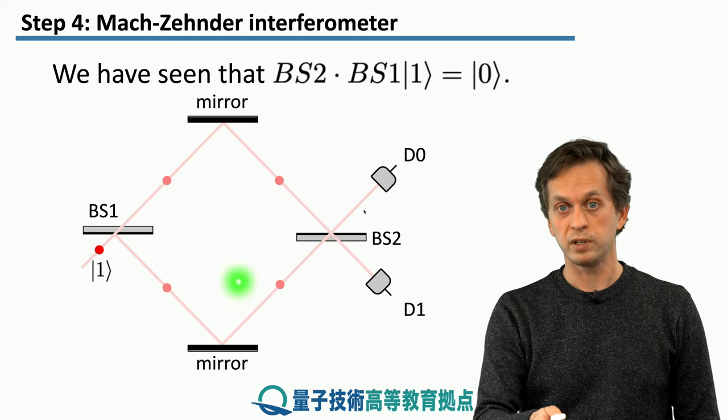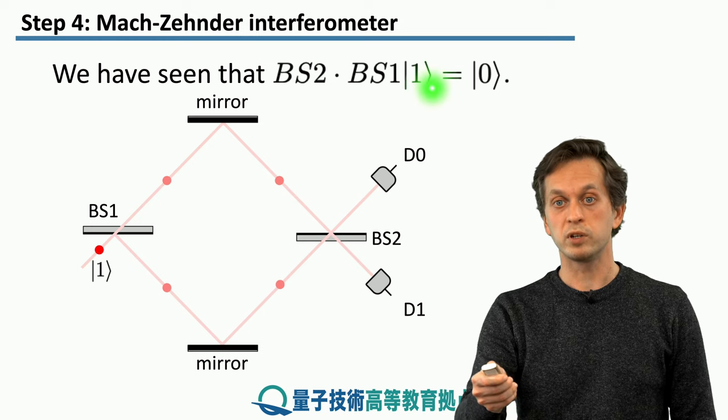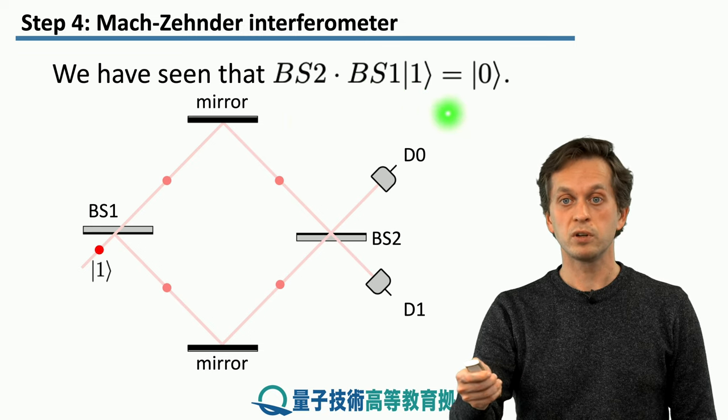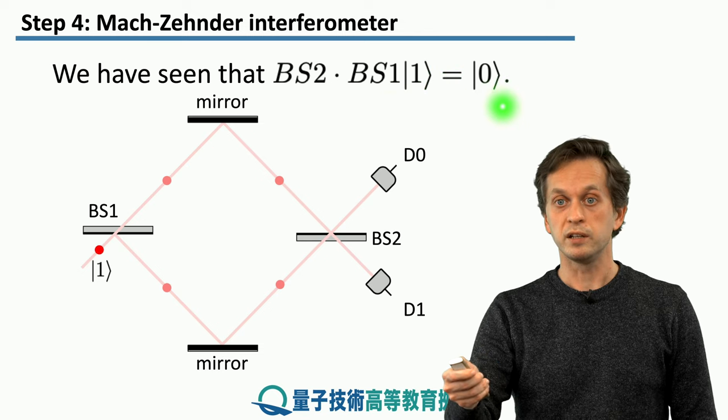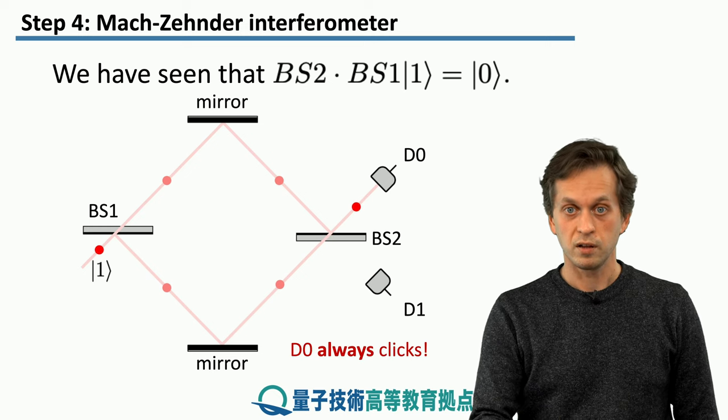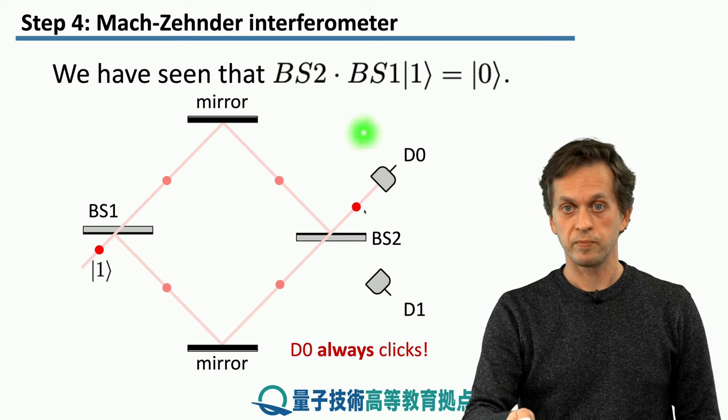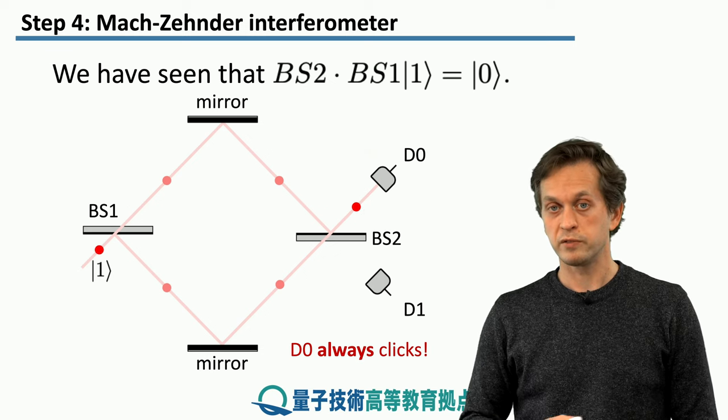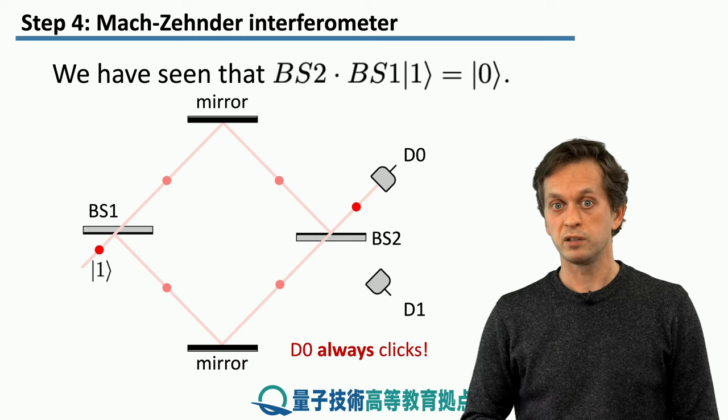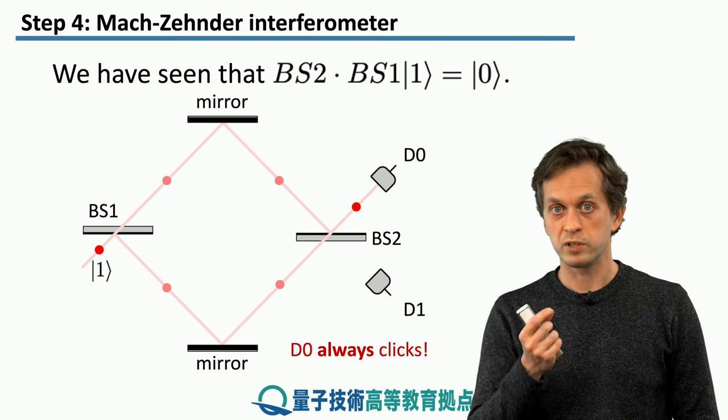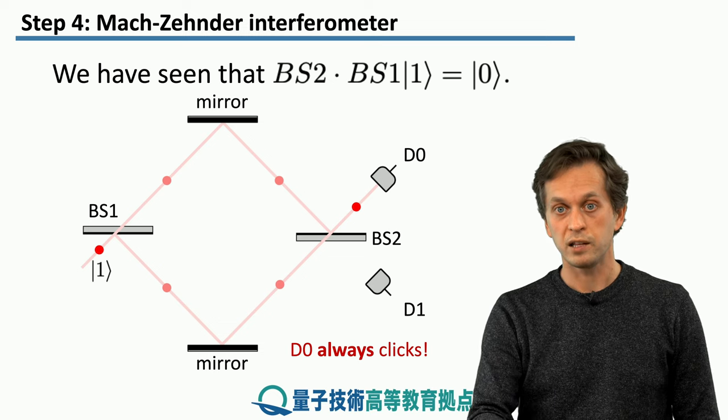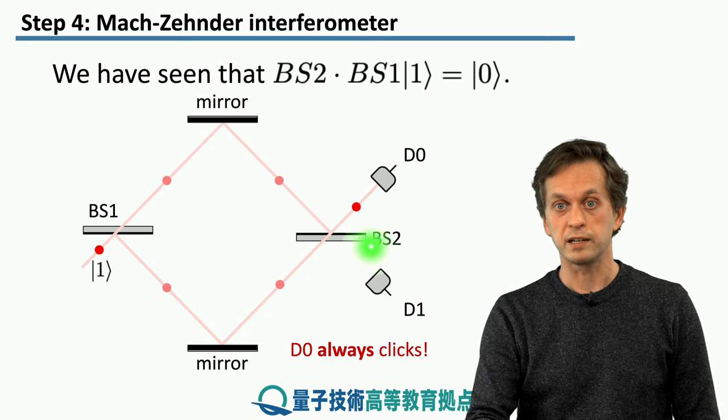And we proved before that if we first act on our qubit, on our initial state with beam splitter 1 and subsequently with beam splitter 2, then we know that if the initial state is in the bottom half, then the output state will always be found in the top half. Meaning, D0 detector always clicks. But yet again, the situation is very similar to the previous step. Here there's only a single photon found in the Mach-Zehnder interferometer. And we cannot divide photons, there's always just one. Yet somehow it knows that it has to interfere with itself and always goes towards detector D0.